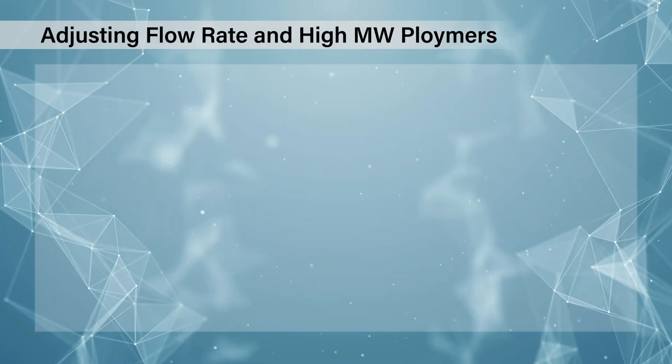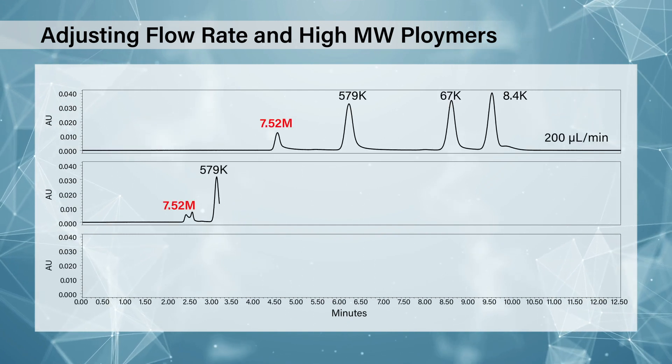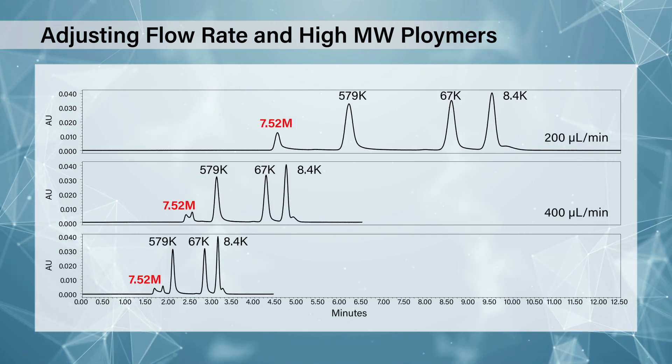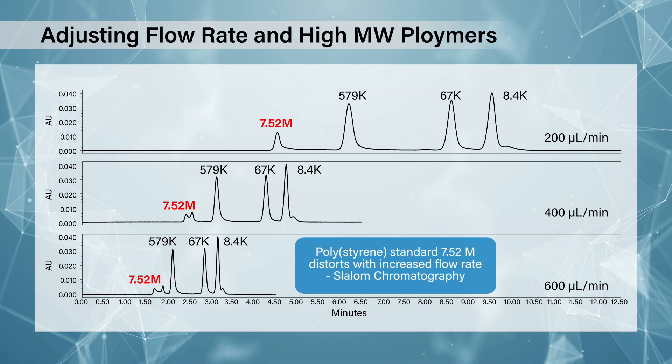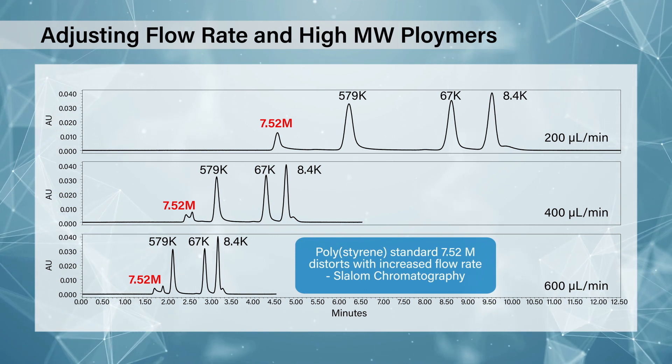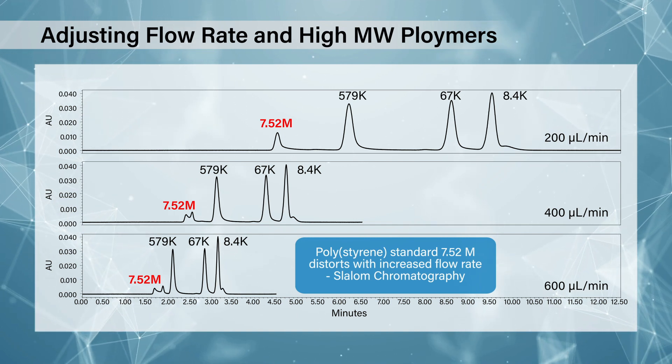When you go to really high molecular weight polymers — here we have samples going all the way up to seven and a half million Daltons — it should be noted that we specify the APC up to two million, so this is really pushing what you can do on an APC. You can see that as you increase the flow rate, you start to get a change in the high molecular weight peak. What you're actually seeing there is slalom chromatography, where you're elongating the polymer chain out, so you're not getting the true size exclusion mechanism of the coiled polymer. There is still no degradation in this case with polystyrene, which is quite strong.